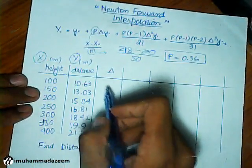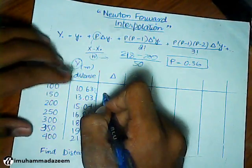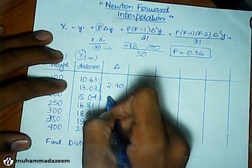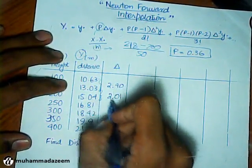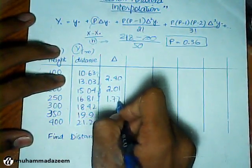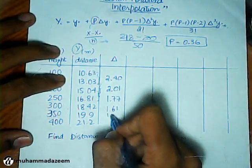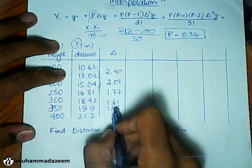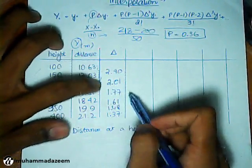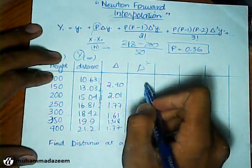Now we have to find delta for this set of data. Delta is going to be the difference of these two. The difference comes out to be 2.40, then 2.01, then 1.77, 1.61, 1.48, and 1.37. Remember, what we have here, we should have one less than in the previous column.